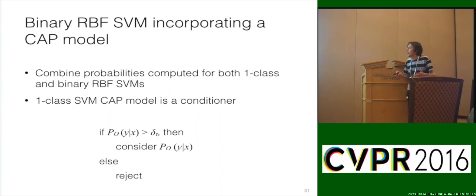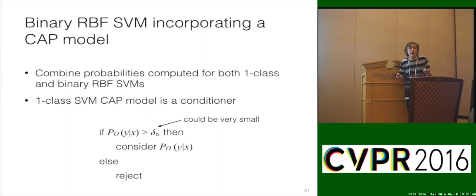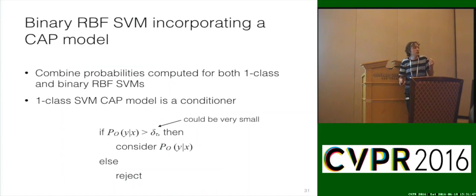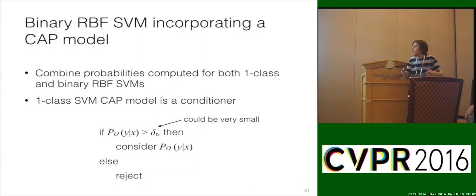The idea with a binary RBF SVM incorporating a CAP model: combine probabilities computed for both a one-class and a binary RBF SVM. The one-class model is quite weak, but if we couple it with a more powerful binary model with known negative data, we can do much better. We use the one-class SVM CAP model as a conditioner — compute the probability using the one-class model for class association, see if it exceeds some threshold, if yes then consider the binary classifier, otherwise reject. We set this threshold delta sub tau to a very low probability — we just want some inkling of class association — because the calibrated binary model will do the heavy lifting, while the CAP stage eliminates an enormous amount of troubling unknowns.